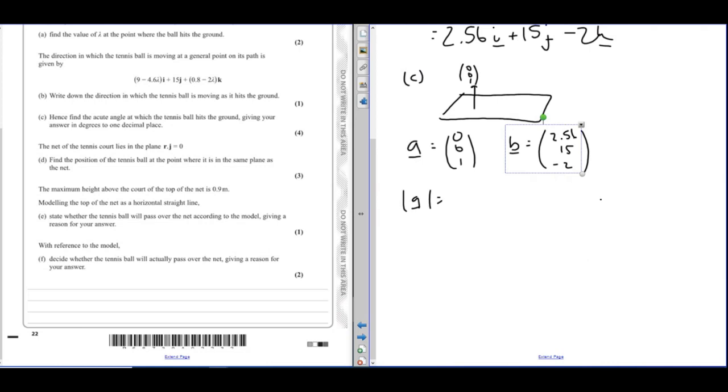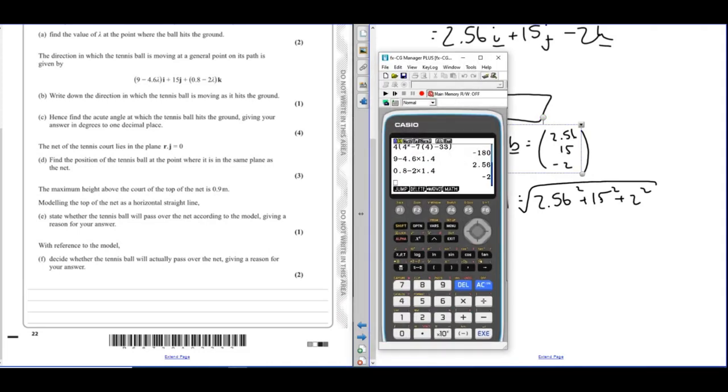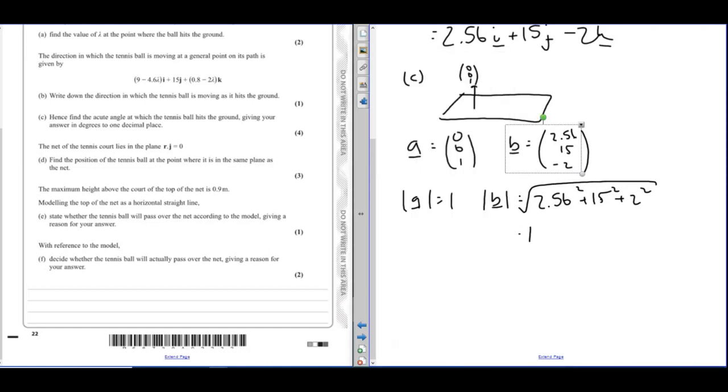So magnitude of a is just 1. Magnitude of b is 2.56 squared plus 15 squared plus 2 squared square rooted. So that's 15.34. Keep that in our calculator for later.